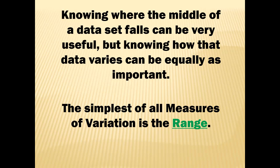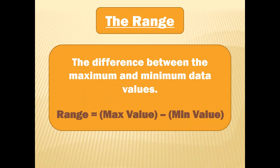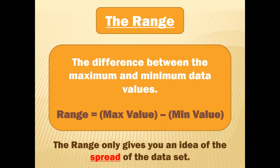The simplest of all measures of variation is the range. The range is the difference between the maximum and minimum data values: range equals max value minus min value. The range only gives you an idea of the spread of the data set — how much space it takes up on the number line from lowest to highest — but it doesn't tell you how the numbers are spread out in that region, so it's kind of minimally important.